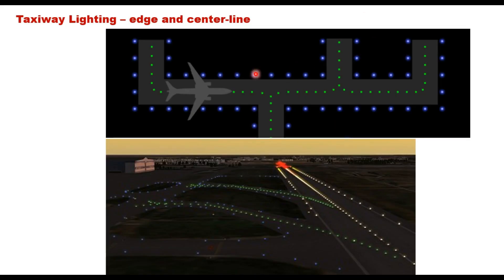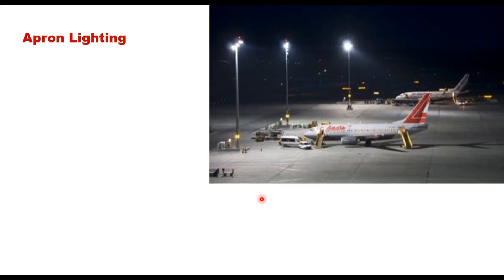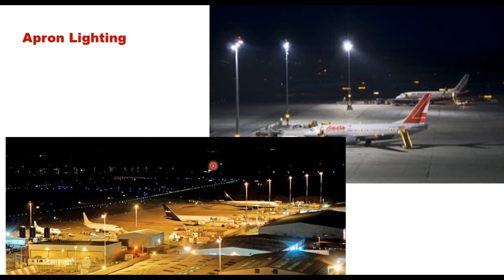The edge lighting of the taxiway is blue, and the center line is green. The runway lighting is white in color, while the taxiway lighting — center line — is green. The apron and hangar area is provided with floodlights, and these are mounted so that they do not cause glare in the eyes of the pilot or passengers. Therefore, these lights are placed either 12 meters above the ground or less than 1.2 meters from the pavement surface.